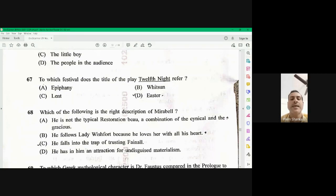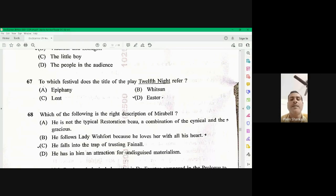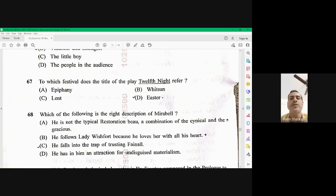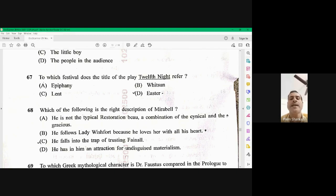Which of the following is the right description of Mirabel? Mirabel is represented as an undisguised materialism. He does not do any kind of changing his personality. He is a clear cut personality. So D is the right option. He has in him an attraction for undisguised materialism. So D is the right option.